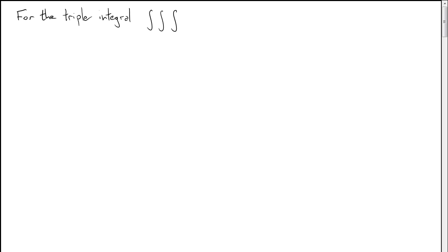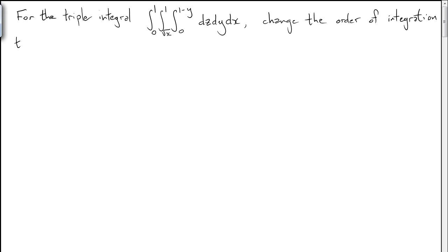Here's a problem concerning changing the order of integration for triple integrals. We're handed this integral where the order of integration is dz dy dx — z first, then y, then x — and we want to change the order of integration to dy dx dz. Now it's not as simple as just swapping symbols around.